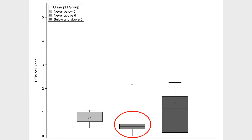This is the graph of UTIs per year against urine pH trend groups, with the low pH group circled in red. There is a non-significant decrease in the number of UTIs per year from the high pH group to the low pH group, as well as a large amount of variance in the fluctuating pH group compared to the other two groups. Although no significant difference was found between the urine pH group and UTI history, this may be due to an inadequate sample size to detect the difference. This study can power a larger one in the future to provide more conclusive evidence that low urine pH is protective against recurrent UTIs.